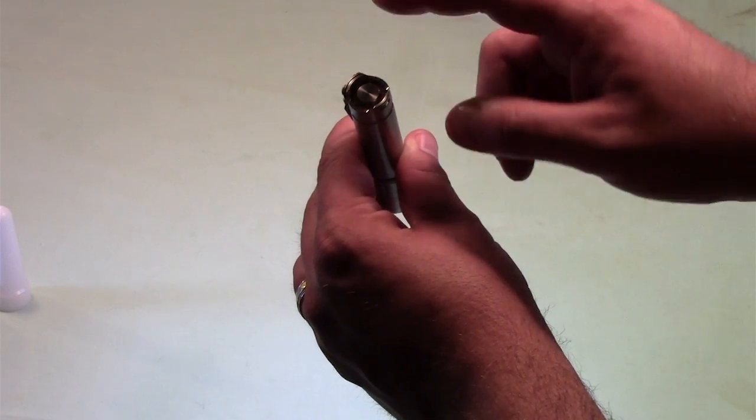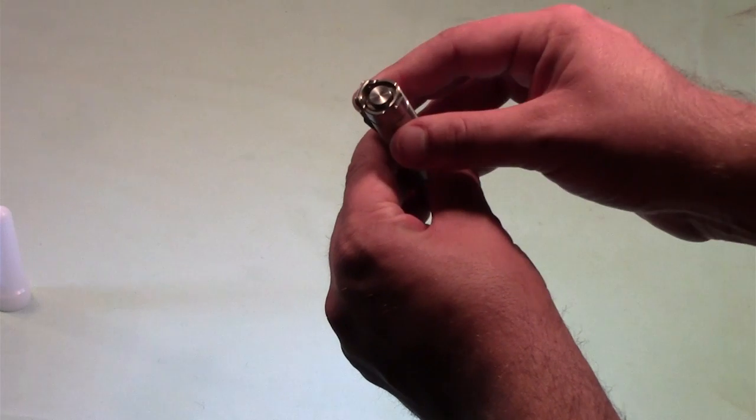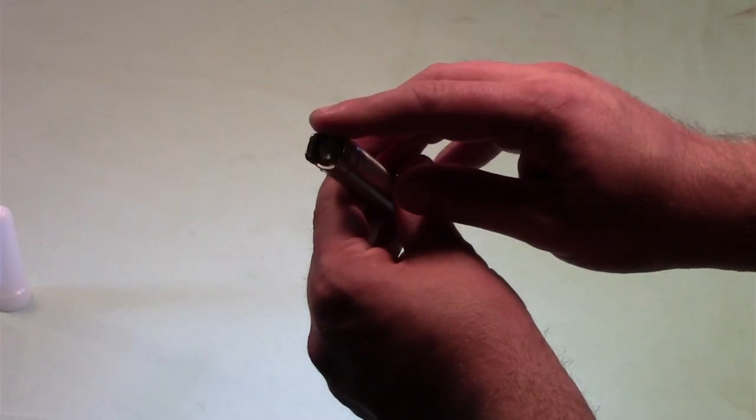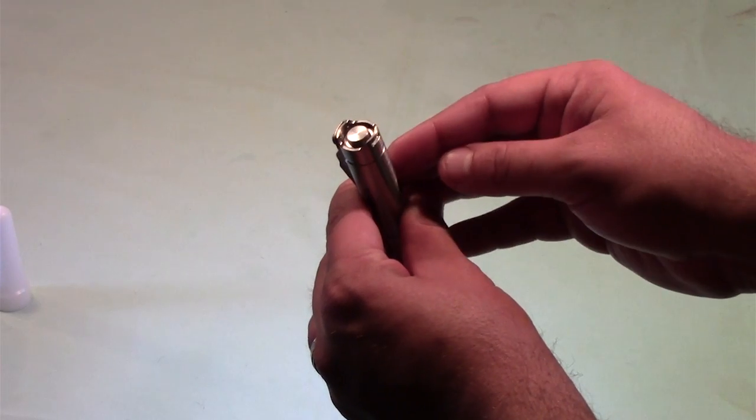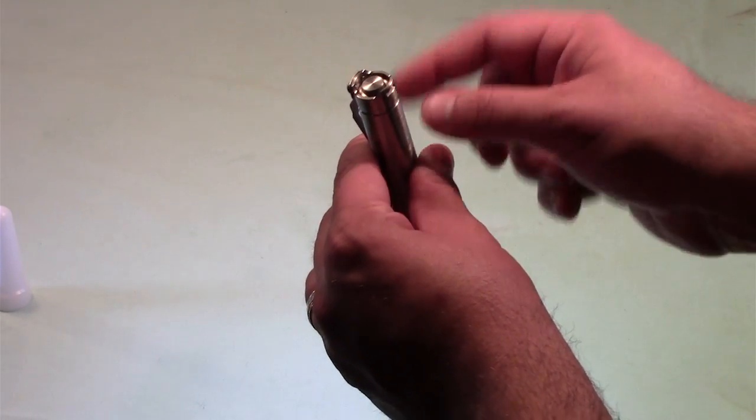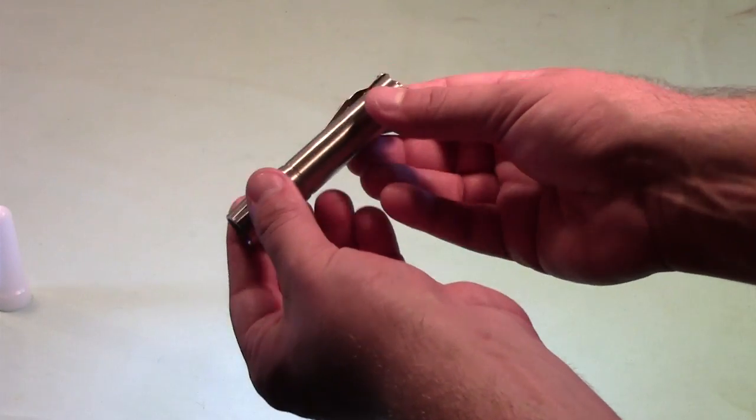One more interesting thing to point out about the tail cap here too, for the switch itself, is that it's stainless. Most tail cap switches you see will be rubberized, polymer, something like that. Something that's usually really easy to break, but even the tail cap switch is stainless. So really, you're looking at a light that is pretty much a hundred percent stainless steel.